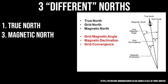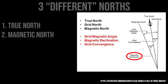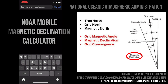Grid north isn't important to us. What we really care about is true north, which is the top of our globe based on the rotation of the earth, and magnetic north, which is usually the tool we use to try to find north, especially when we're polar aligning. So let's see why it's important that we understand both true north and magnetic north.